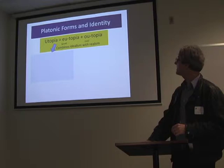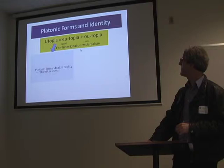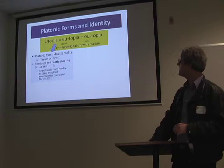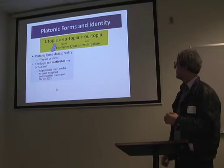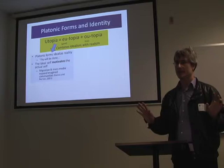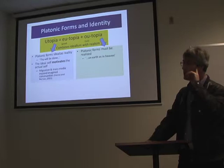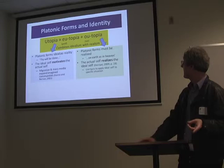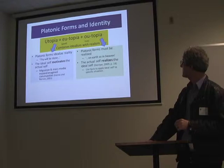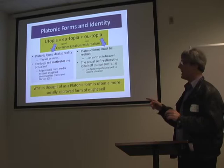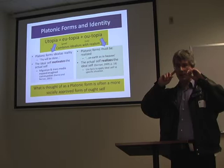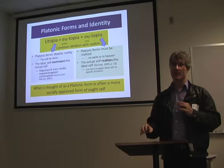Interesting — the word utopia combines 'eu' meaning good and 'ou' meaning not. So you have 'thy will be done on earth as it is in heaven.' Norton talks about the ideal self motivating the actual self — think about the church. What is the perfect church? It doesn't exist — it's only in your head, it's a Platonic form, but it motivates you. However, you still have to realize that perfect church in an actual church. So thy will be done on earth as in heaven: the actual self realizes the ideal self. What we often think of as following Platonic form is often just ought sounds — what that person says the church or country should be, rather than your internal concept.